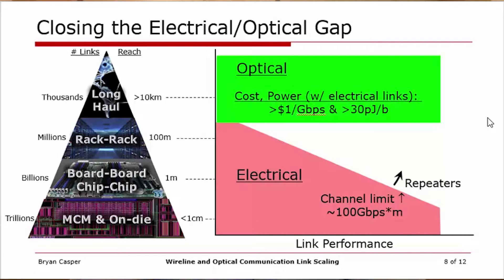Optical has had, and continues to have, a limitation associated with cost and power. Cost is usually referred to as dollars per gigabit per second, and power in terms of picojoules per bit or milliwatts per gigabit per second, commonly in US dollars. Optical has been constrained to well above a dollar per gigabit per second, whereas electrical links may in many cases be pennies per gigabit per second — significantly less, especially at short distances, where it can be sub-pennies per gigabit per second.